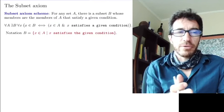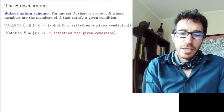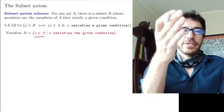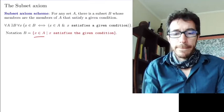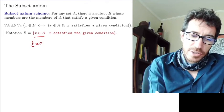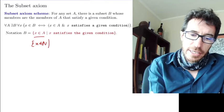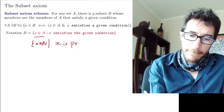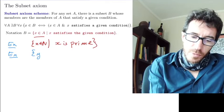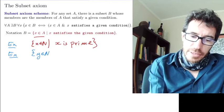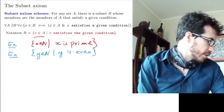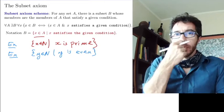For notation, the set B is written as the set of all x's in A such that x satisfies the given condition. For instance, the one we had before was x in the natural numbers such that x is prime. Another example: y in the natural numbers such that y is even.